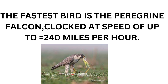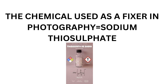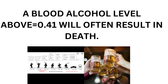The next one: the brightest color emitted by the sun is yellow-green — these two colors are the brightest emitted by the sun. Next, the chemical used as a fixer in photography is sodium thiosulfate. A blood alcohol level above 0.41 will often result in death — if anybody does huge consumption of alcohol and their blood alcohol level reaches 0.41, it will often cause death.